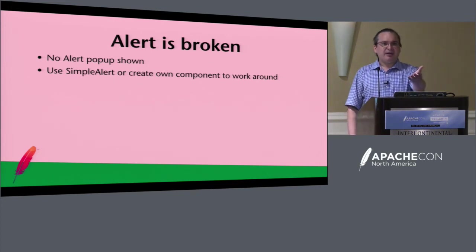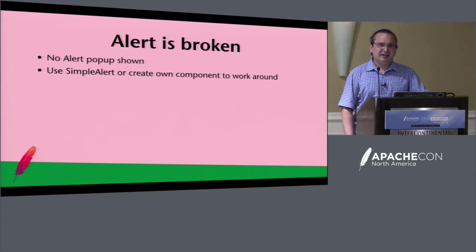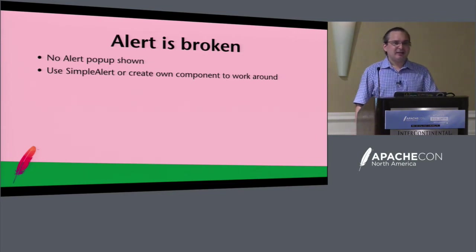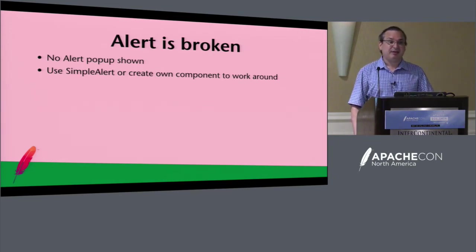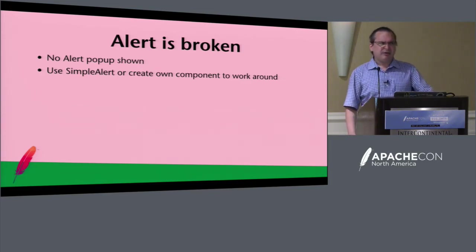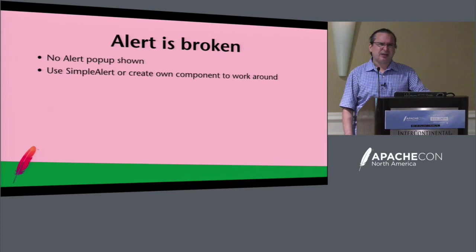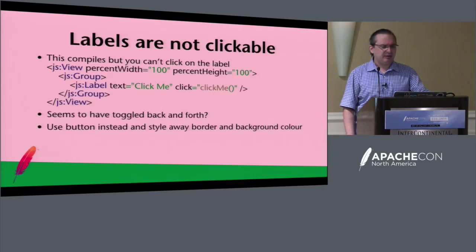Alert is broken. I tried it last night and it was broken — it might be a browser issue. We're using the Express component set. Anyway, there's something odd with alert, but simple alert works, so just create your own component. I did look into why it was broken and I'm pretty sure it's an easy fix — I suggested it on the list but I don't think it's been done yet, so it's on my list of things to do.